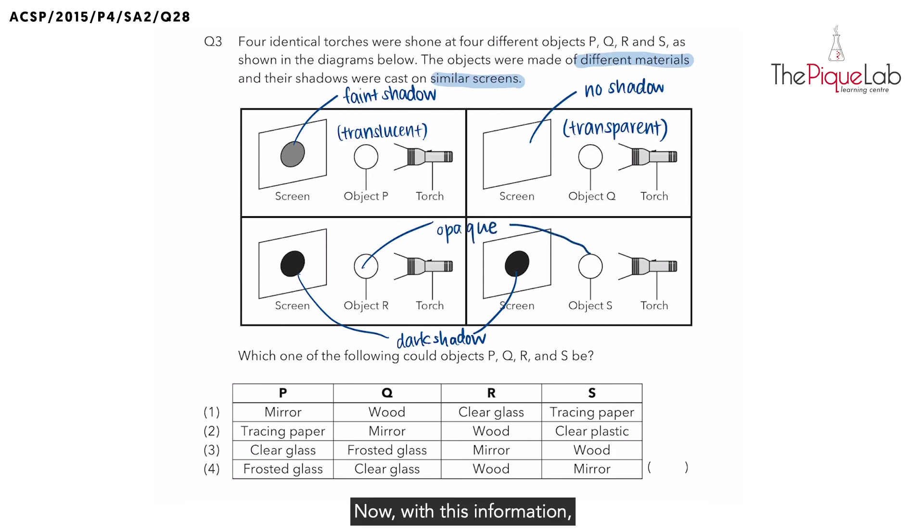With this information, we should be able to get our answer. For object P, remember, we are looking for an object that is translucent. The first option that is given to us is a mirror.